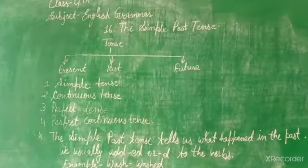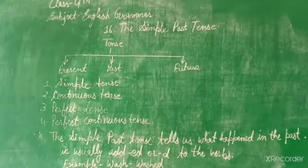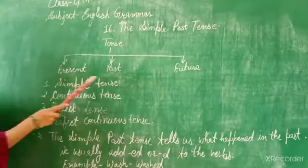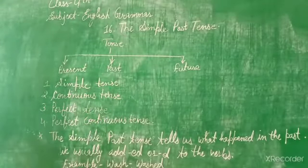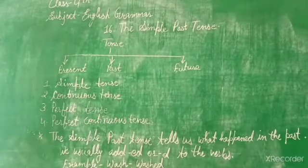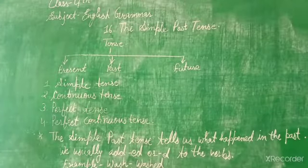As you know, there are three types of tenses: present, past, and future. These three types of tenses are further divided into four parts.